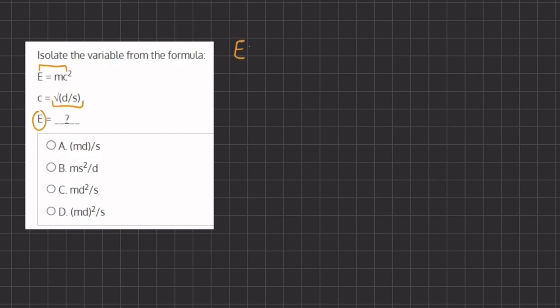So if we do so, we have E equals m times c squared, which is the square root of d divided by s, and we are going to raise it to the power of 2.